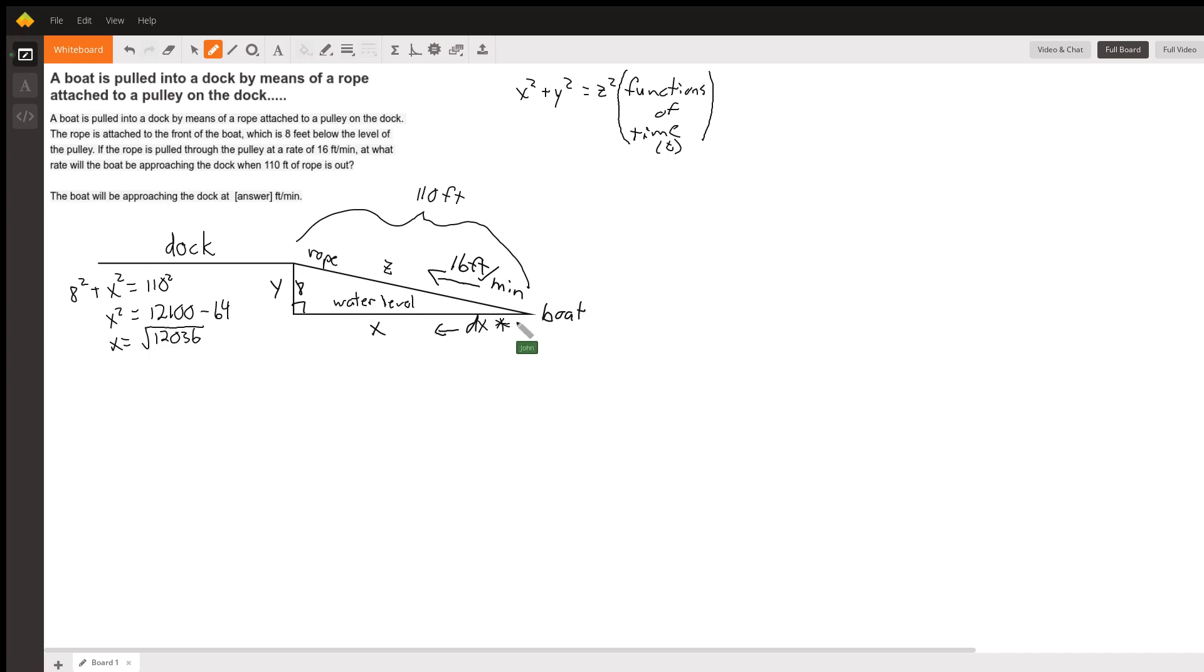This 110 feet is like the hypotenuse of a right triangle, and the height of this triangle is eight. We can figure out how far out the boat is along the water level by Pythagorean theorem. We get square root of 12,036 by solving for the x that we have here. And I've got variables x, y, and z.